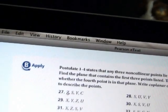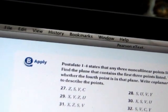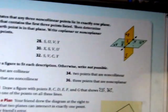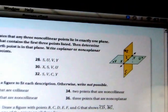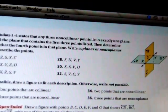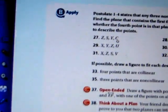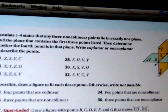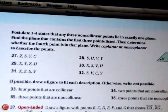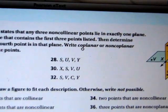So number 27 says Z, S, and Y. So let's look for Z, S, and Y. Like we've said before, any three points have to be coplanar. And you can tell the Z, S, and Y lie inside this plane here. The fourth point we need to talk about is C. Does C also lie in the same plane? It does. So these four points are coplanar. So you write the word coplanar, which is written right here.